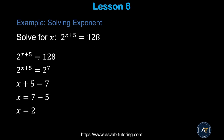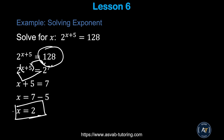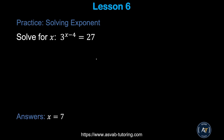Practice: solve 2^(x+5) = 128. Rewrite 128 as 2⁷. Since the bases are equal, x + 5 = 7, so x = 2. Try the similar practice problem and make sure you get x = 7.